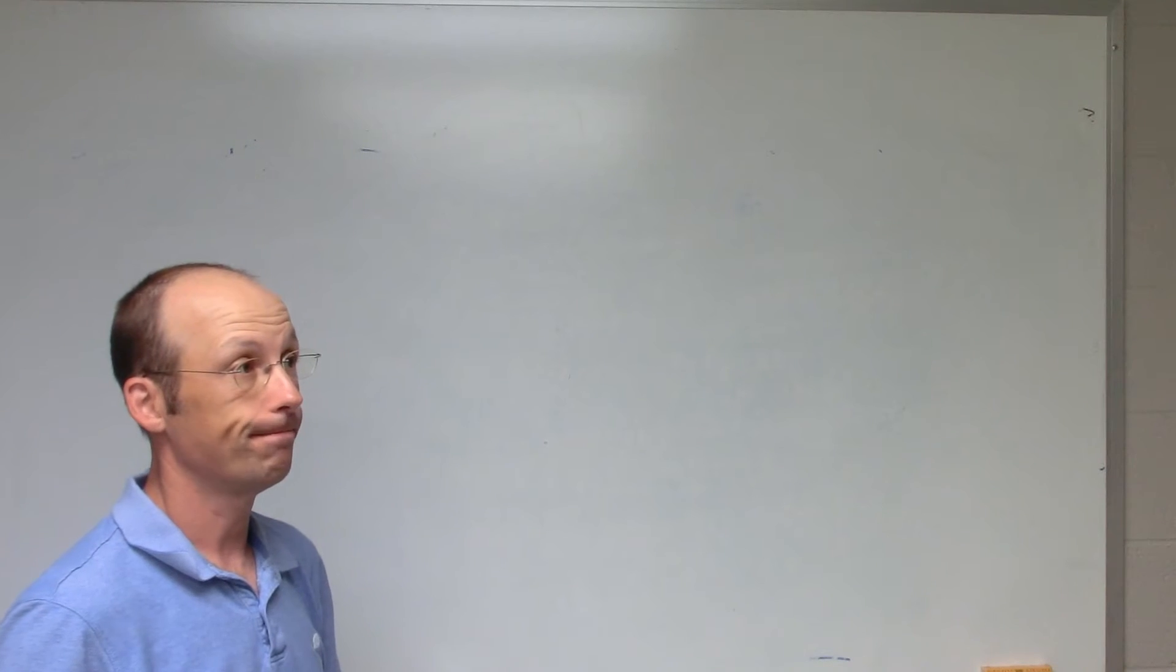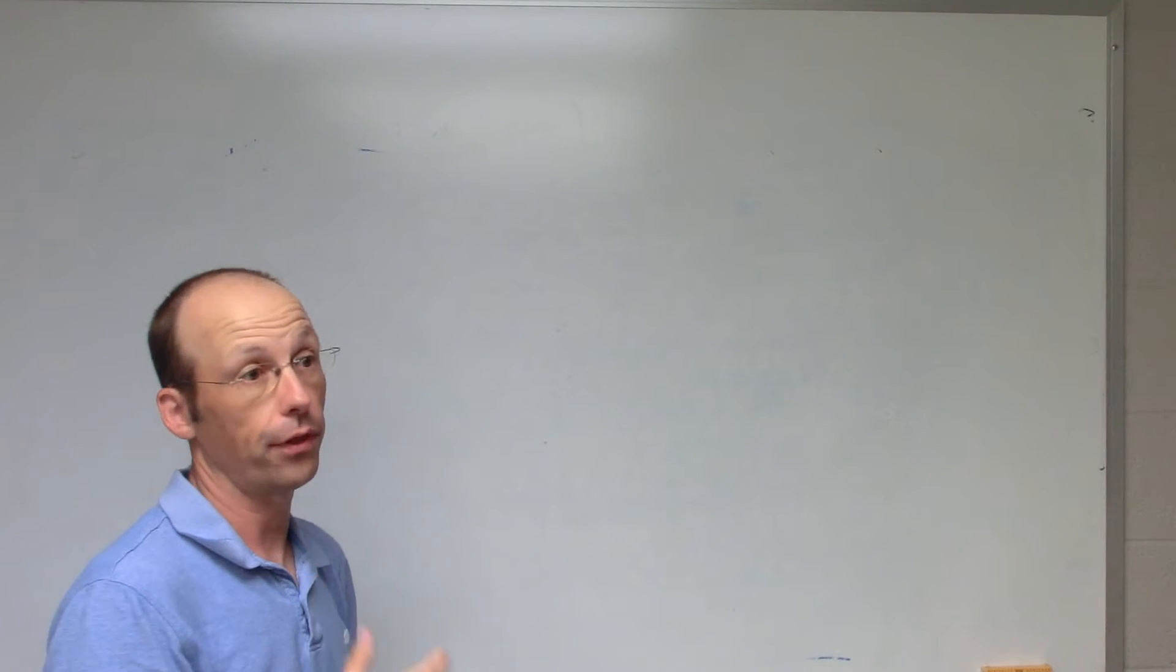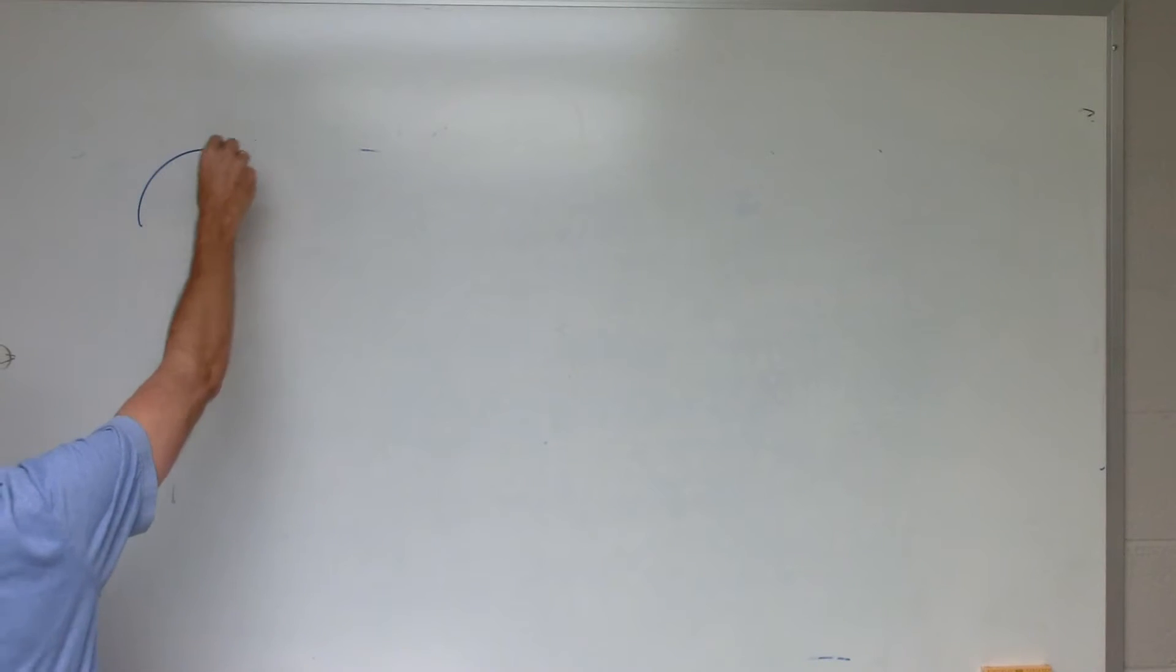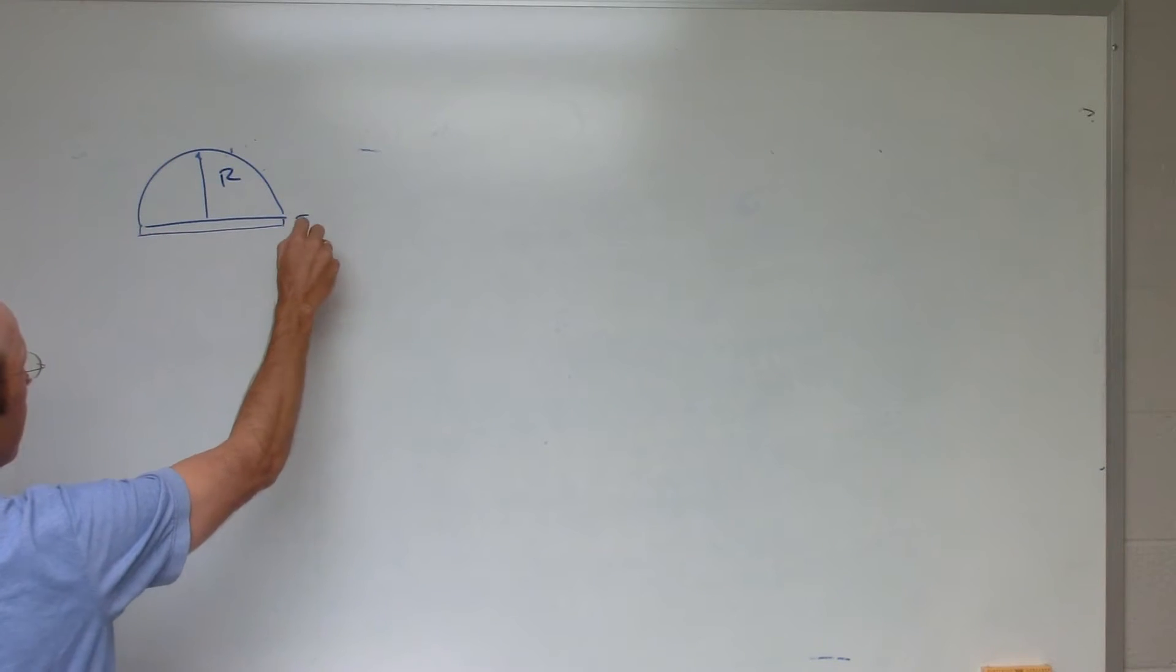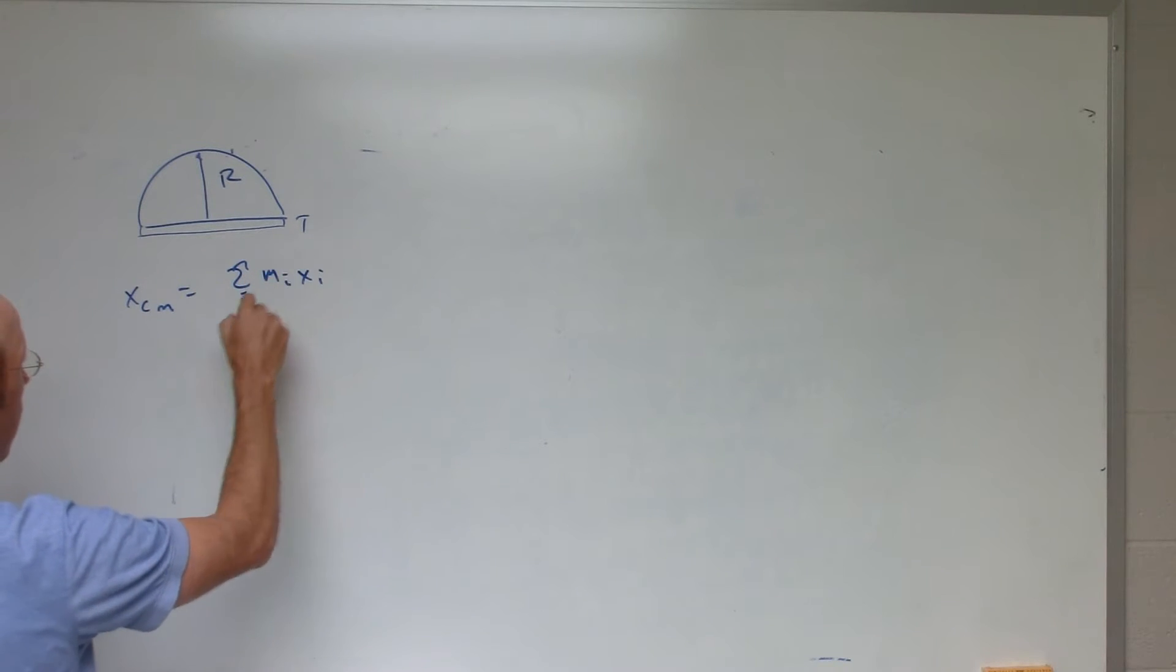Okay, so here is half of a circle, and let's say it has a radius of r, and it's got some thickness t. It's a real thing, right? And I want to find where the center mass is. So I have equations like this: x center mass equals the sum over i, m_i x_i over m total. That's the center mass from the x direction. And then I have one for the y and the z direction.